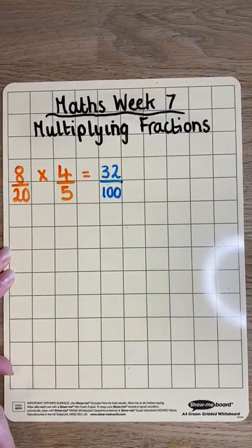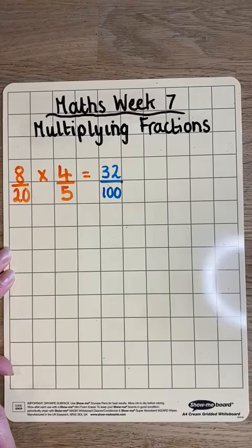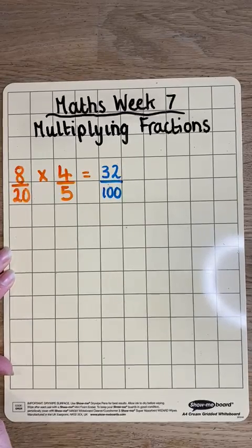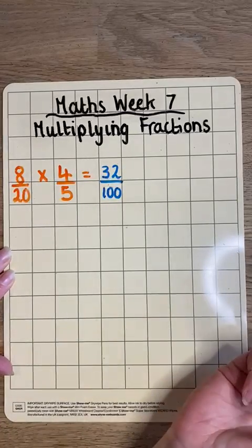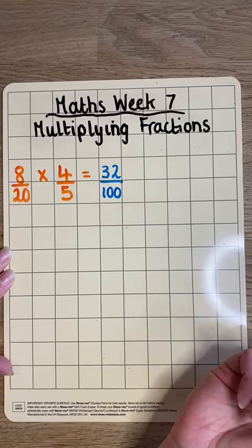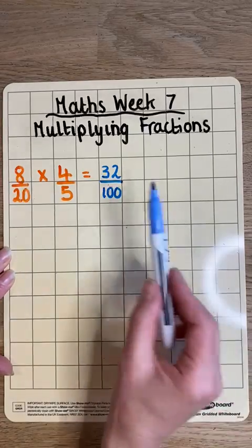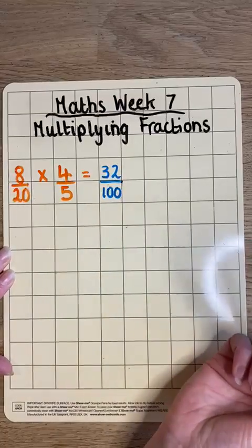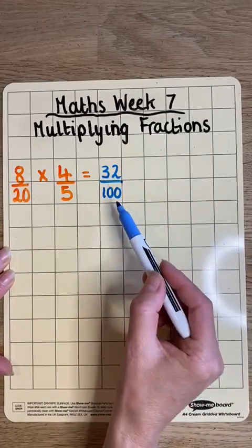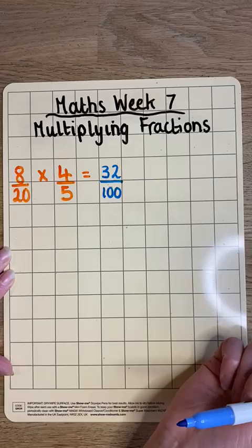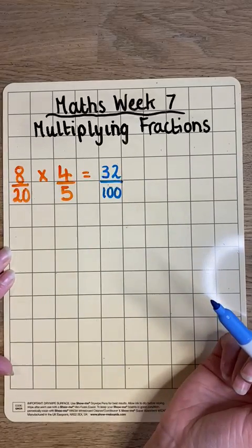So there's my answer. Now I have to put it into its simplest form. To do that, I have to find an equivalent fraction. I need to find a number that I can divide both the numerator and denominator by, so a number that will go into both 32 and 100.